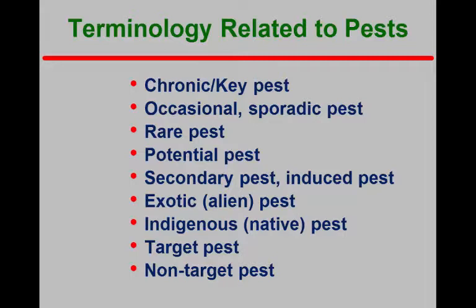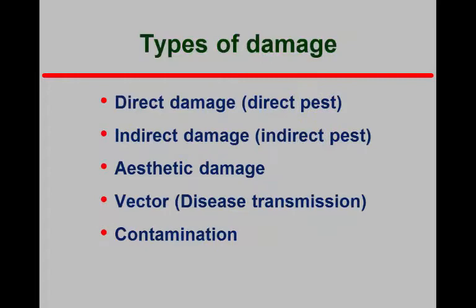A target pest is the one I have in my sights when I'm applying a control material — the pest I really want to manage and bring down to a level where it's not causing any problems. A non-target organism — I don't like the term non-target pest, the better term is non-target organism — refers to something like the predators for the spider mites that I accidentally killed off when I sprayed the insecticide to control the codling moth. That would be a non-target organism affected by my control efforts.